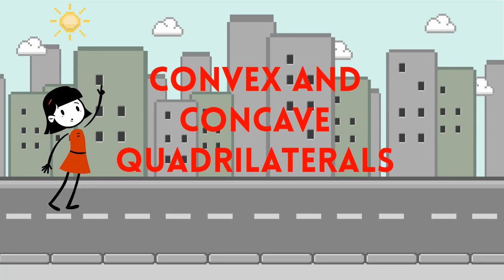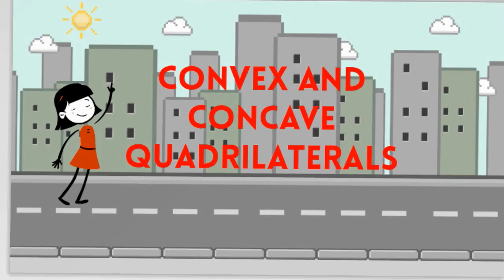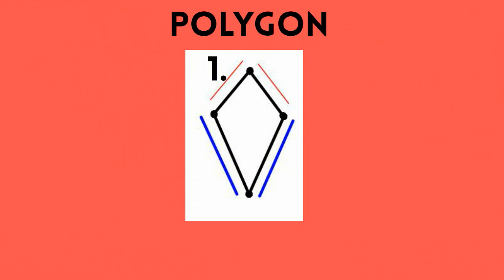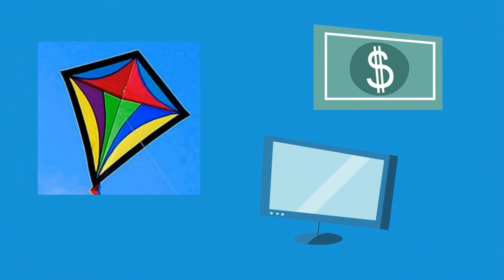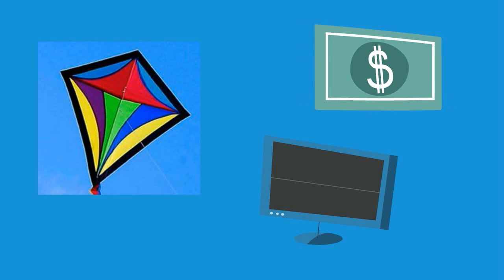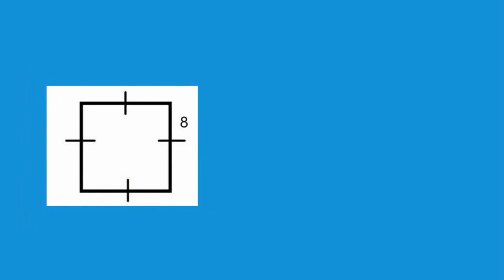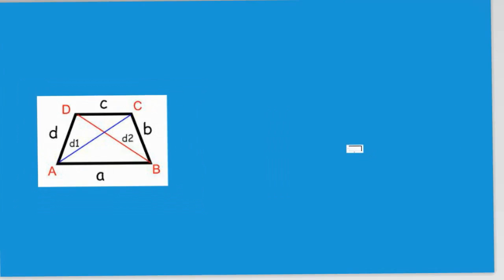Convex and Concave Quadrilaterals. A quadrilateral is a four-sided polygon. Quadrilaterals come in different shapes and sizes, and many common shapes we encounter daily are quadrilaterals. A few examples would be a square, a rectangle, or a trapezoid.